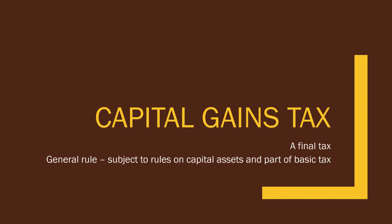Let's proceed to capital gains tax (CGT). Capital means this pertains to capital assets. Normally, the sale of capital assets should be subjected to rules on capital assets and form part of the basic tax. However, under capital gains tax, there are only two transactions. All other transactions relating to capital assets apply the rule on capital assets. CGT is also a final tax, and there are only two transactions subject to CGT.